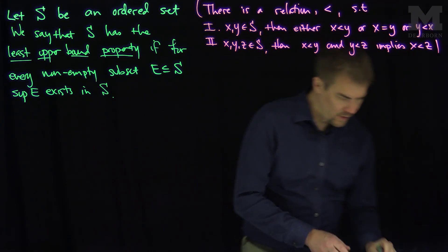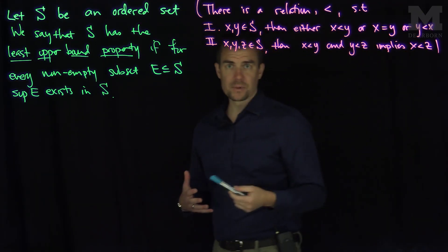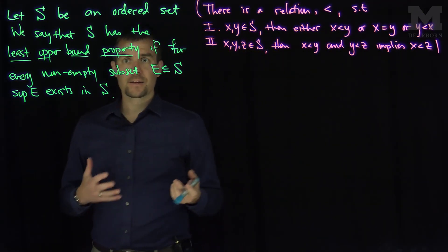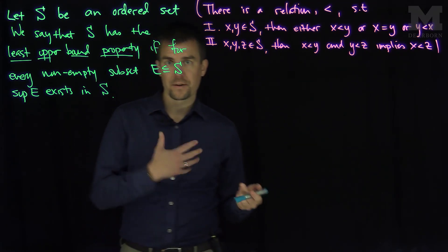And now, we can have two sort of classic examples of a set, an ordered set that does not satisfy this least upper bound property, and one that does.